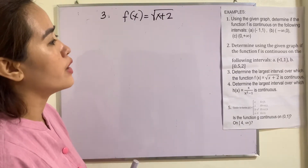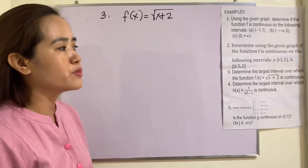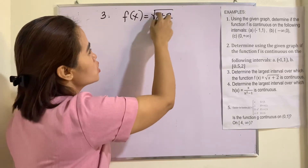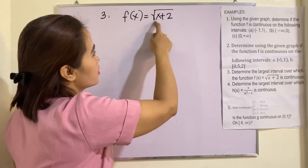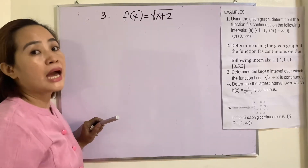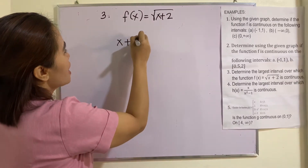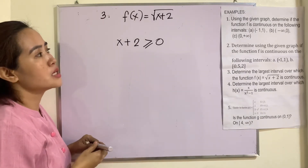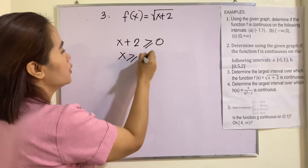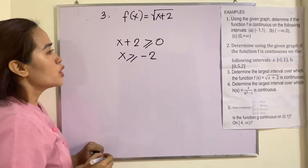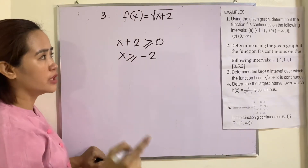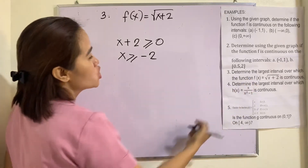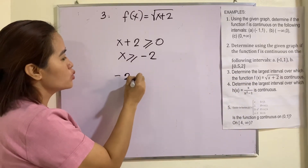Example number 3: Determine the largest interval over which f(x) = √(x+2) is continuous. The given equation is a radical equation. The radicand should be non-negative because if it becomes negative, y will be imaginary. So x + 2 must be greater than or equal to 0, which gives x ≥ −2. This means from negative 2 up to positive infinity, the function is continuous. So the interval is [−2, +∞).